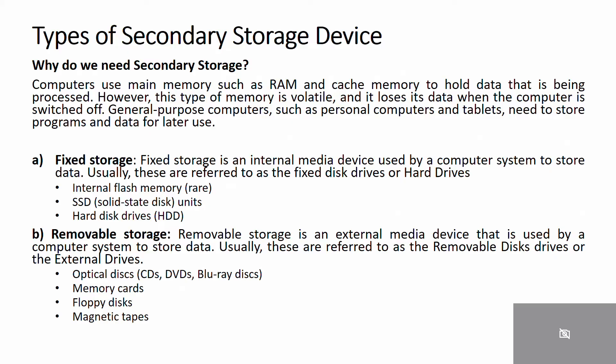There are mainly two types of storage: fixed storage and removable storage. Fixed storage refers to internal media devices used by the computer system to store data, usually referred to as fixed disk drives or hard drives. Examples include internal flash memory, which is rarely used, SSD (Solid State Drive), which is frequently used nowadays, and HDD (Hard Disk Drive).